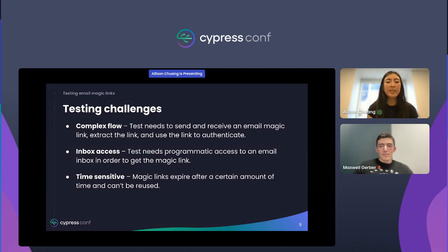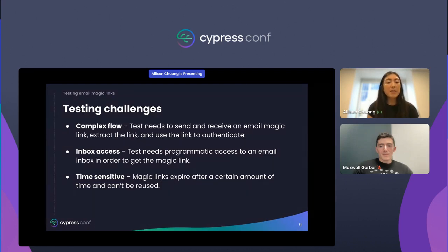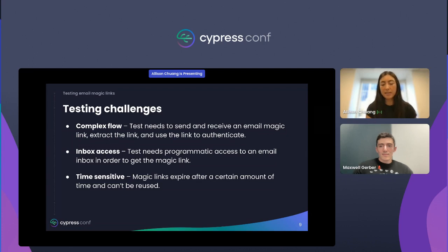In addition, you also need programmatic access to an email inbox. And since magic links expire, they cannot be reused across multiple tests.